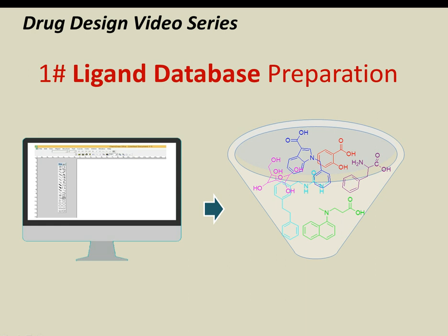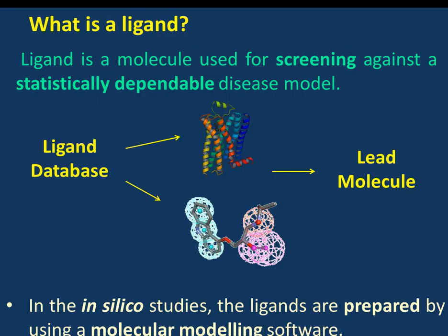Welcome to Pharmacy Student Resource. Today we discuss ligand database preparation. A ligand is a molecule used for screening — it is a statistically dependable disease model used to obtain a lead molecule. The ligand database contains several molecular structures tested against a disease model, whether a protein target or a pharmacophore model is available. After evaluating via scoring, we obtain a lead molecule, which is the ultimate objective.